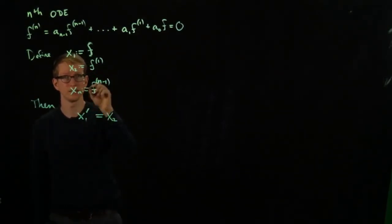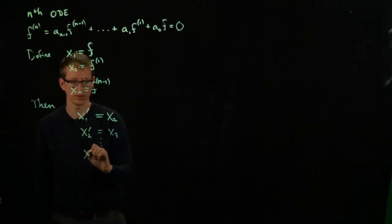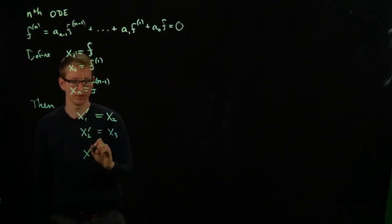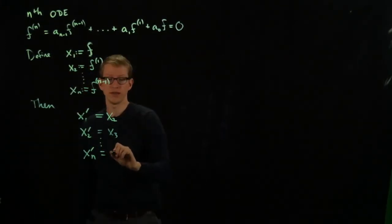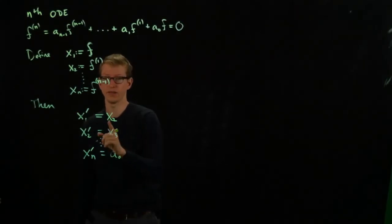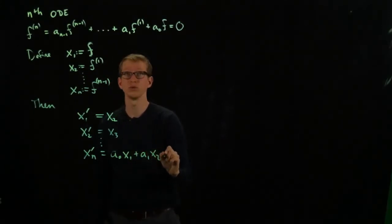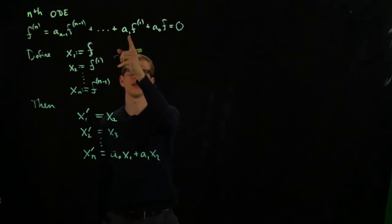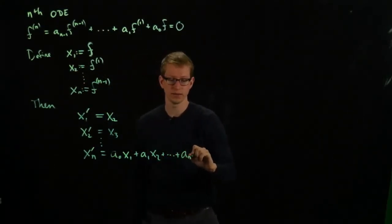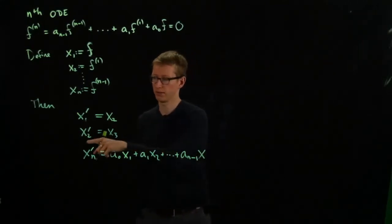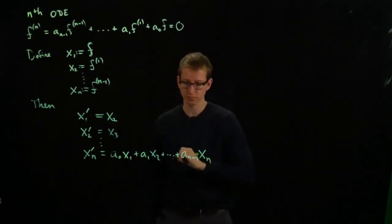Going down the list: x_2' equals x_3, and so on, up until x_n', which equals the full expression: a_0 x_1 plus a_1 x_2 plus ... plus a_{n-1} x_n.